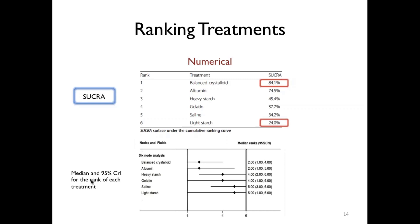Another format to report rankings numerically is the median rank with 90% credible intervals for the rank of each treatment. It is important that, independently of the format used to present the ranks, you always need to consider that these ranks need to be expressed with uncertainty intervals, since they have demonstrated a high degree of overlap — particularly between the first three top interventions. This applies not only to the median rank but also to the SUCRA.